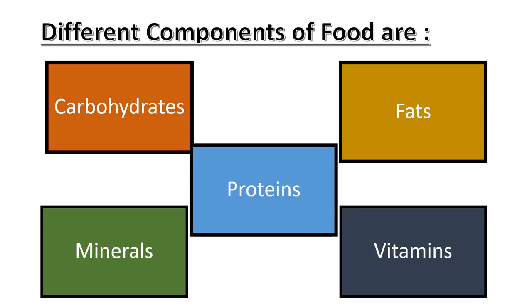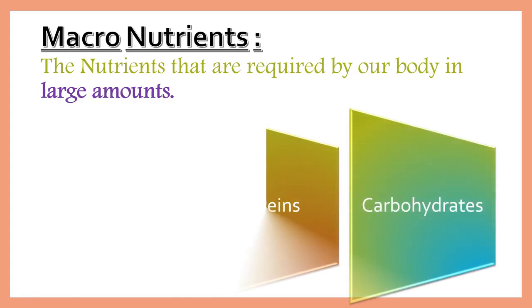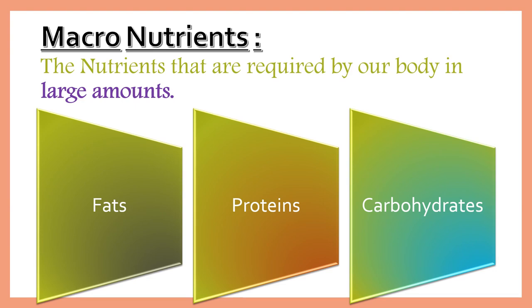We have different components of food: carbohydrates, fats, proteins, vitamins, and minerals. All these nutrients are broadly divided into two categories based on the requirement by our body. The first category is macronutrients — these are the nutrients required by our body in large amounts. They are carbohydrates, proteins, and fats.